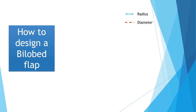In order to design a bi-lobed flap we first need a defect. You measure the center of the defect and measure one radius, which is the blue arrow. You then extrapolate this one radius to get your pivot point and measure 90 degrees from there into your defect to get the 90 degree axis.